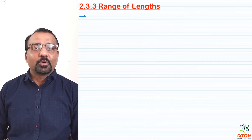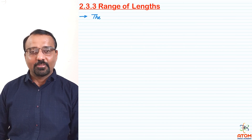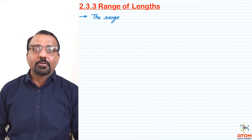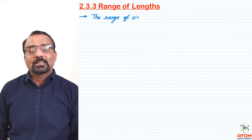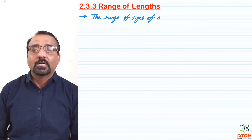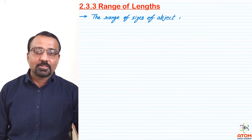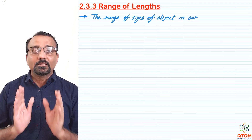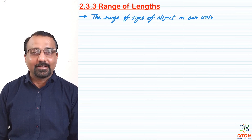Let us see topic 2.3.3, that is the range of lengths. We measure plenty of different types of distances which range from very low values, starting from 10 raised to minus values, to 10 raised to plus values. In our universe, the range of length varies over a very wide range.